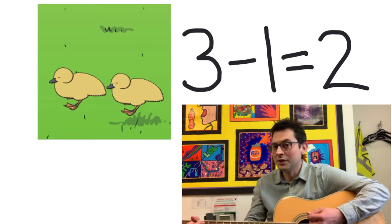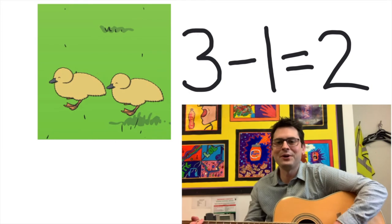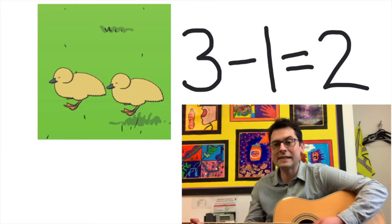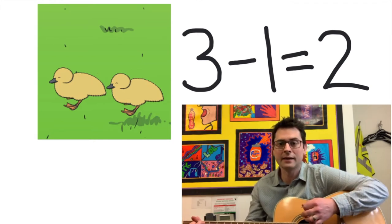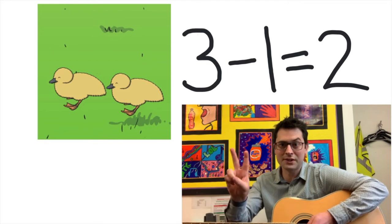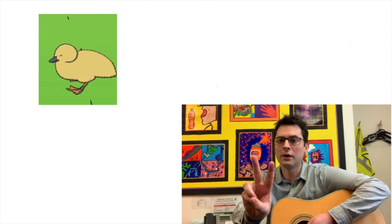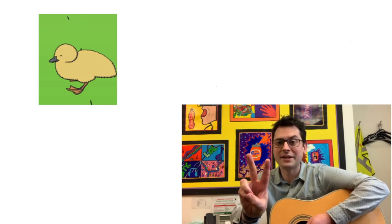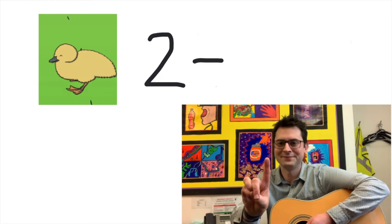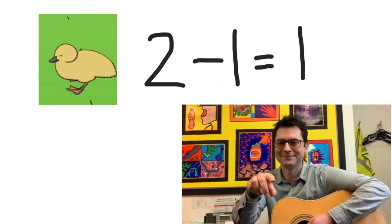Let's keep singing. Two little ducks went swimming one day, over the fields and far away. Mama duck said whack, whack, whack, whack. And only one little duck came back. So we had two ducks swimming over the hills and one fewer came back — one less. Show me with your counting objects. One less than two is one. You say: one less than two is one.